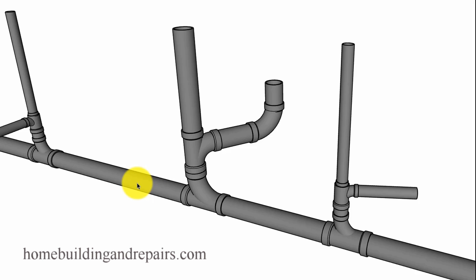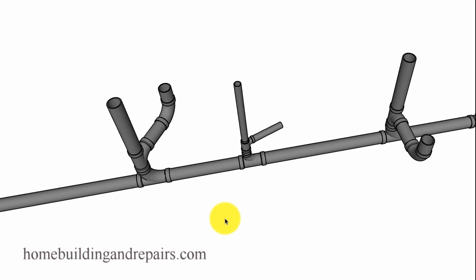You're allowed to have 35 fixture units on a three-inch line, so you might think you could put four or five bathrooms in — but they don't always allow that. You need to check with your local building department to verify this information. Ask them how many toilets you can put on a three-inch line; if they say four or five, you're good to go.